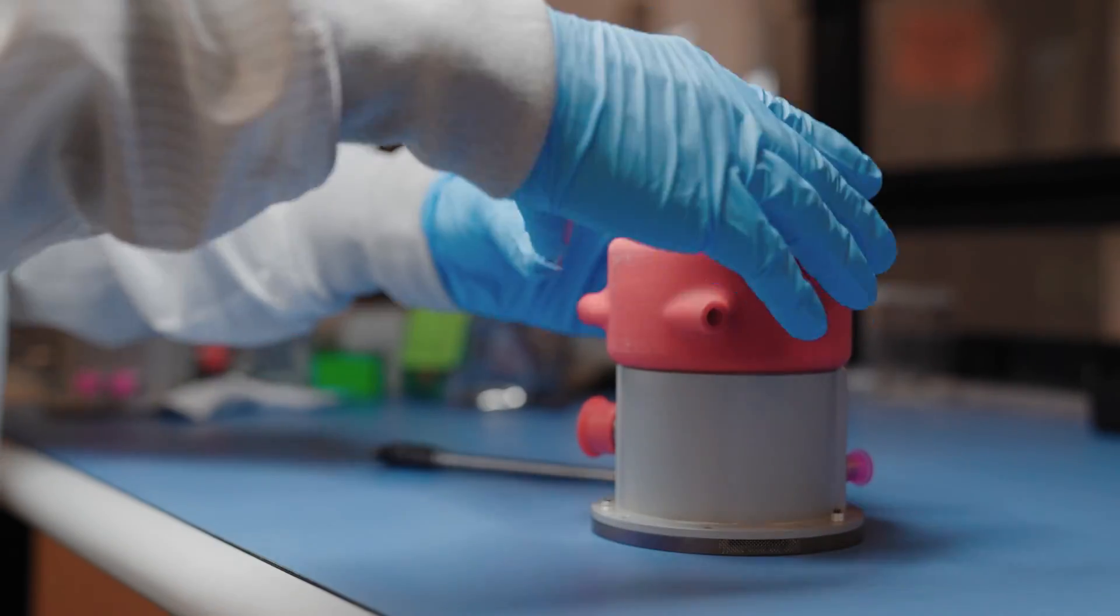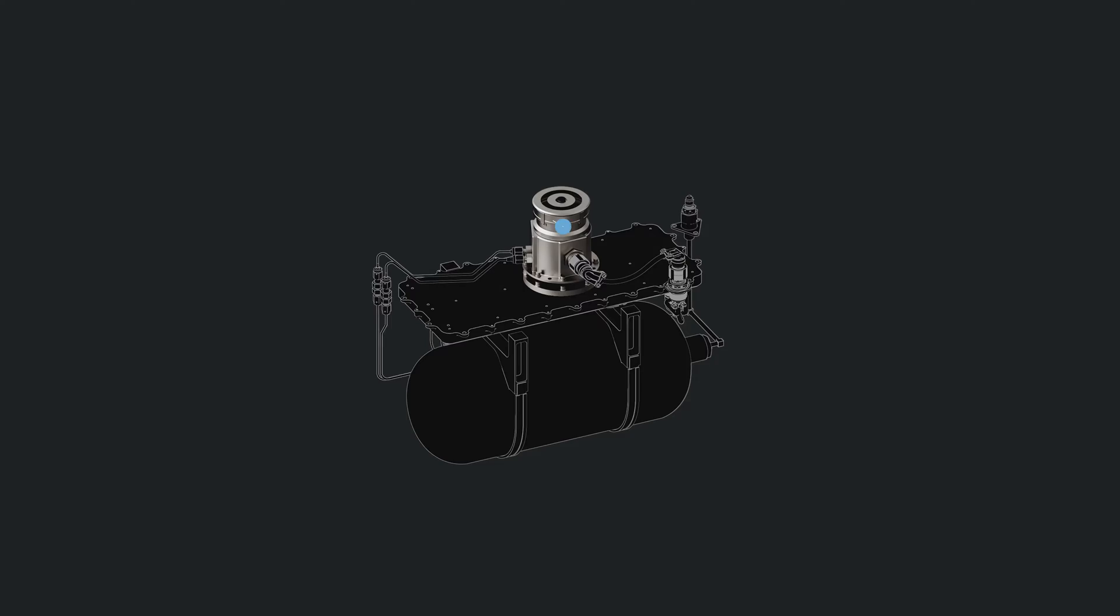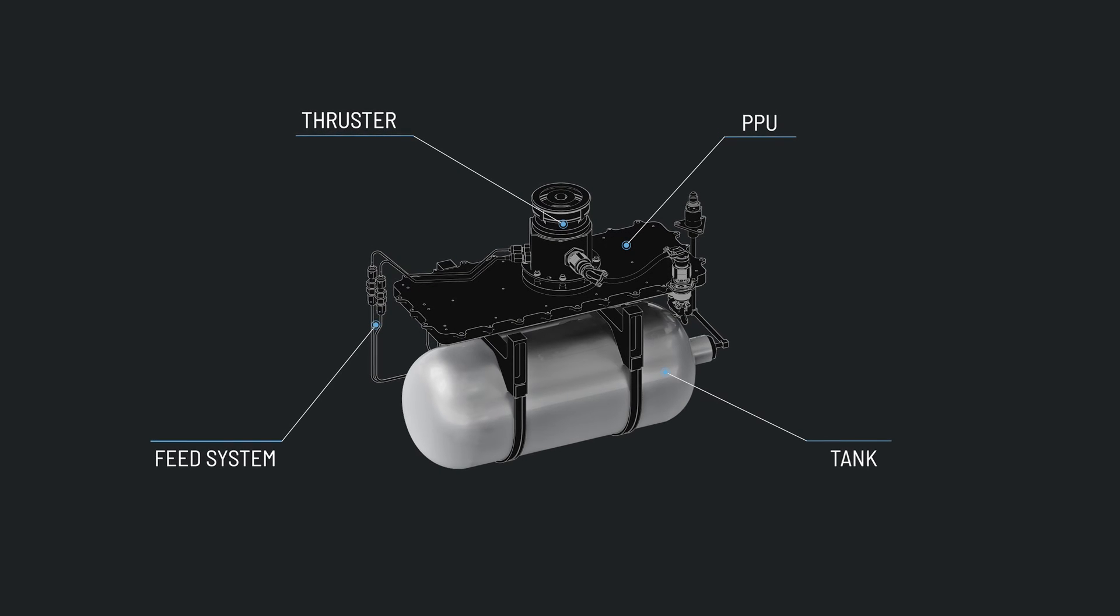The Astro spacecraft engine is a Hall Effect thruster and the full propulsion system that goes with it. So that includes our power electronics, the feed system, and all propellant lines and assembly hardware as well.